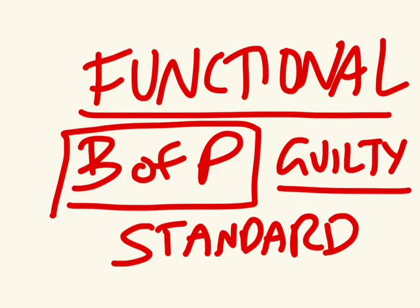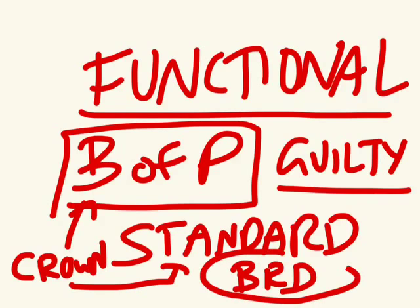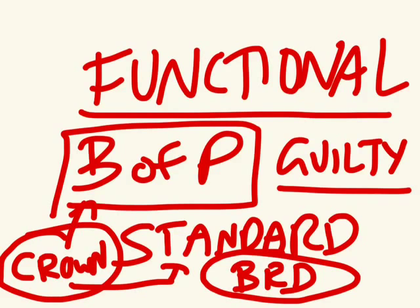It says this person will not be guilty unless the burden of proof is met by a particular party — the Crown — at a particular standard: beyond a reasonable doubt. That's the functional aspect of the burden of proof. It tells us the quantum of evidence that must be put forward, enough to prove beyond a reasonable doubt, and also who has to make that proof — the Crown, the prosecution in a particular case.